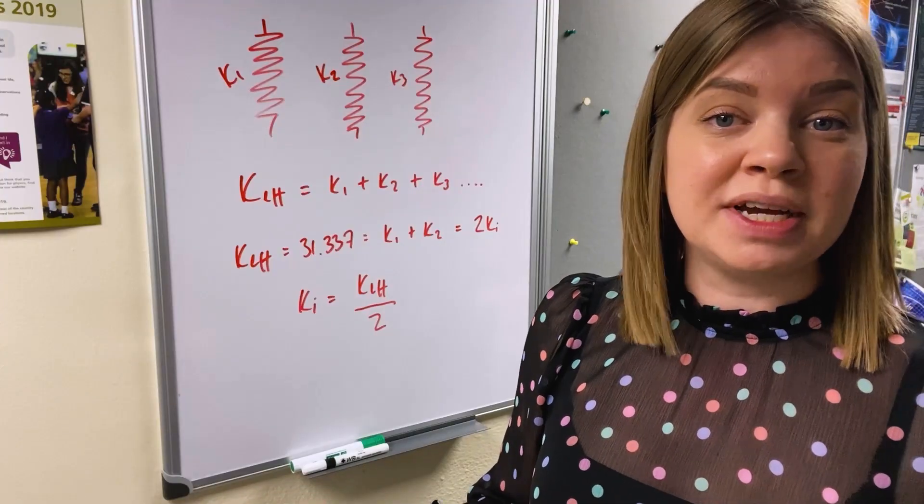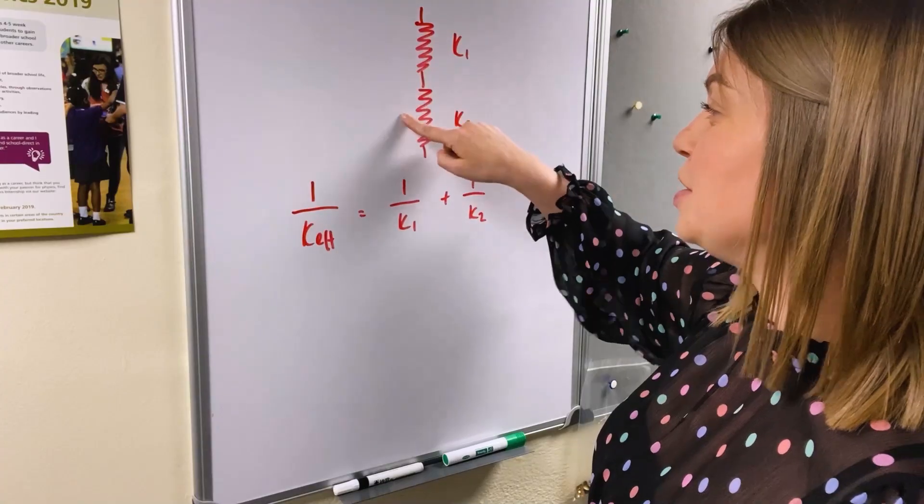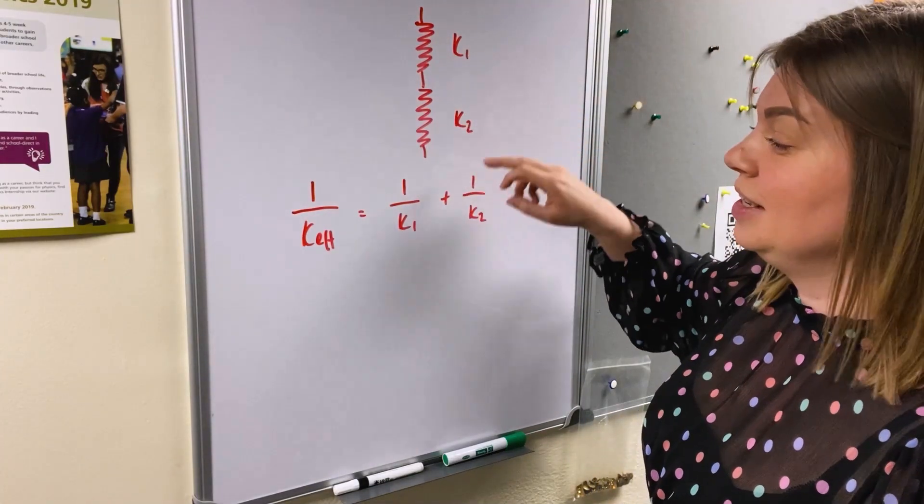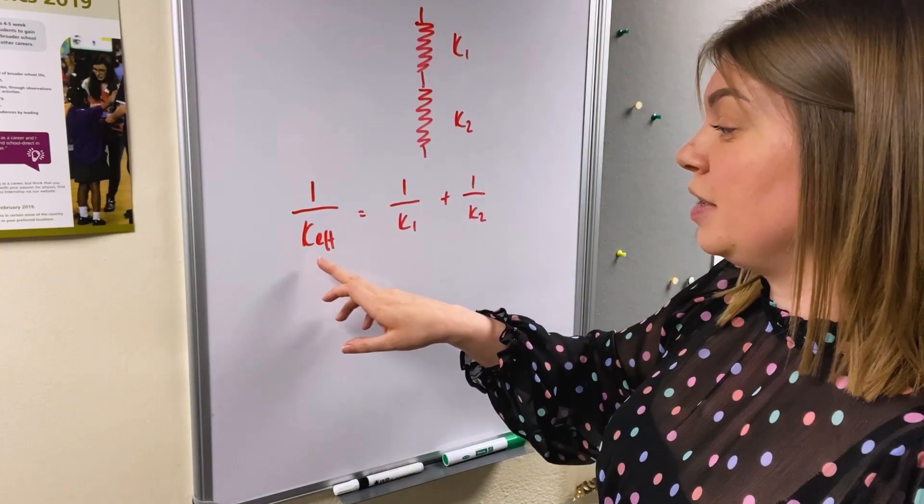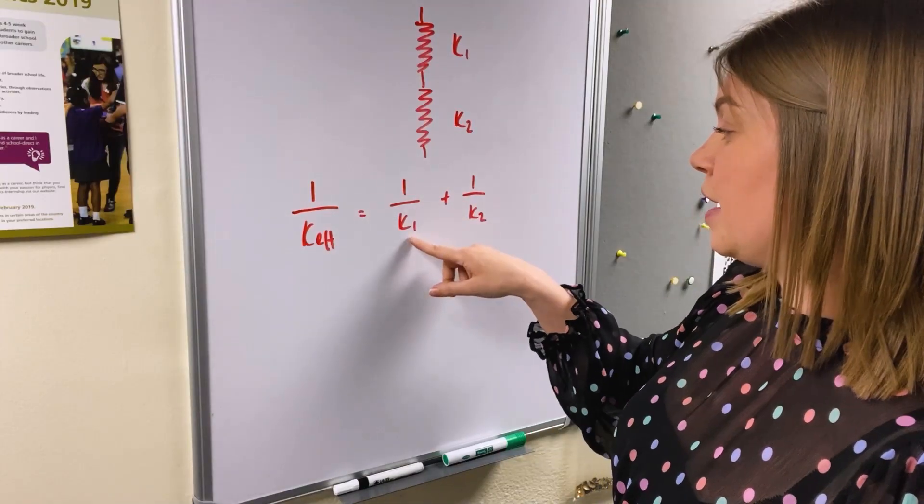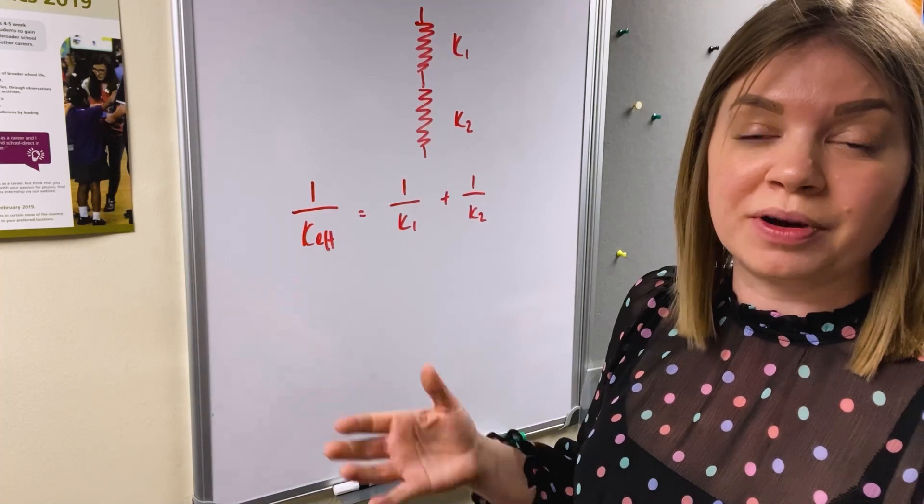Here we've got two springs, spring one and spring two with spring constants k1 and k2 respectively. Now this time the formula for the effective spring constant is one over k effective equals one over k1 plus one over k2. So it's essentially the same as before but just the reciprocal. Again let's go and test this with the equipment and see what we get.